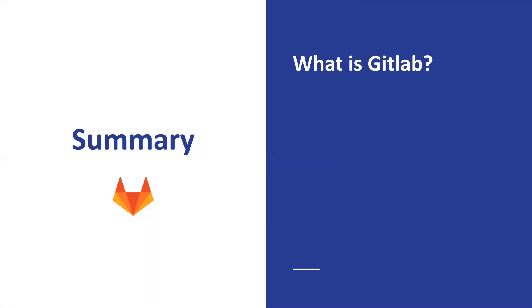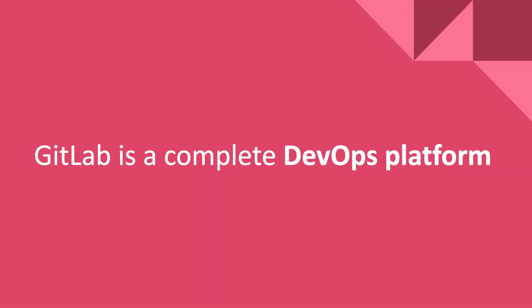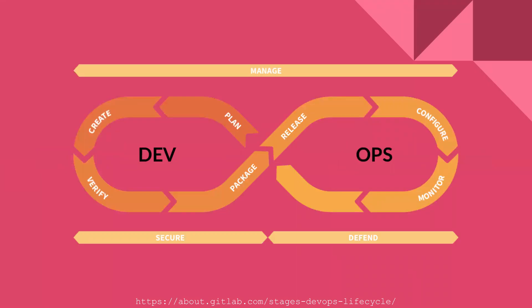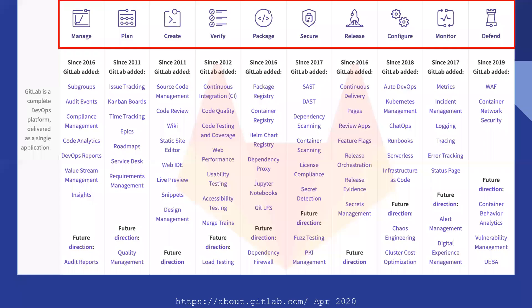In summary, we looked at what is GitLab. A lot of people say GitLab is just another source code management tool, whereas from what we saw, GitLab is actually a complete DevOps platform. We didn't really dig into a lot of stuff on the right-hand side, but it gets very technical. I'd especially recommend exploring the security section — it's quite cool. We looked at the 10 tiers of GitLab, which allow the dev team and operations team to work well with the security and management teams.